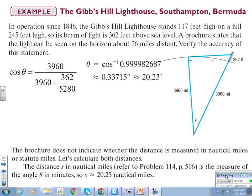So, the brochure did not indicate whether the distance is measured in nautical miles or statute miles. So, let's calculate both distances. The distance in nautical miles is a measure of the angle theta in minutes. So, somewhere you guys need to highlight that. The distance in nautical miles is a measure of our angle in minutes. So, S is approximately equal to 20.23 nautical miles.